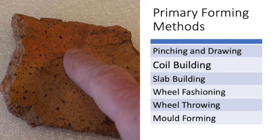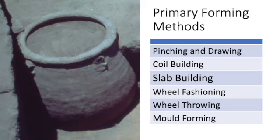In sherds from coil-built pots, you can sometimes detect the boundaries between coils, either in tangential view or in a broken cross-section. Vessels may also tend to fracture along coil boundaries.